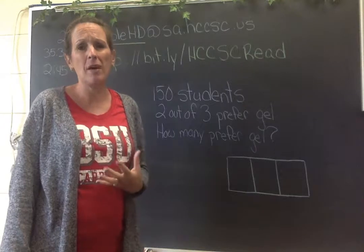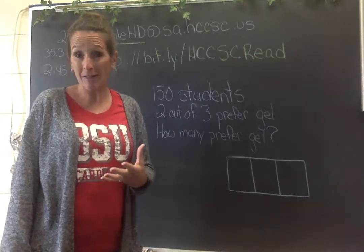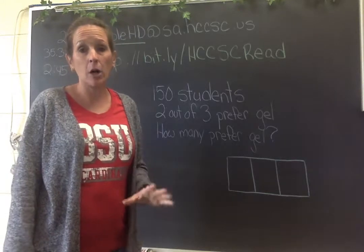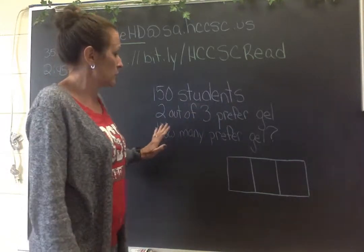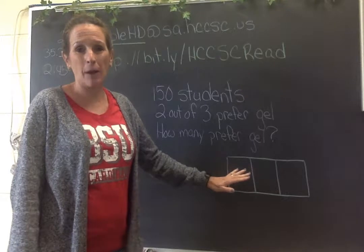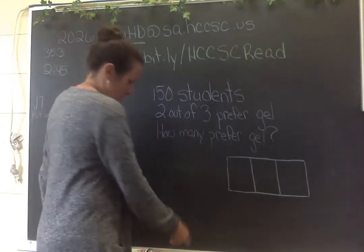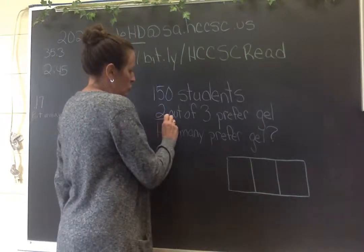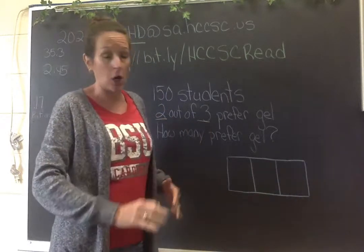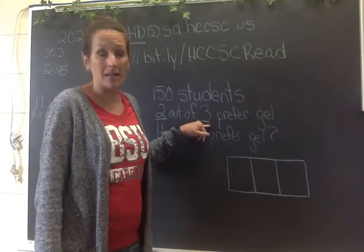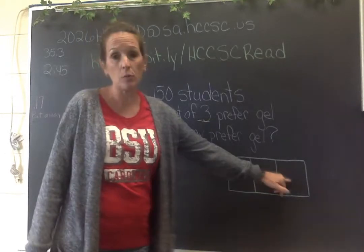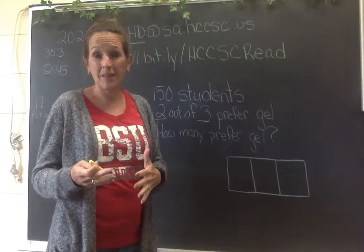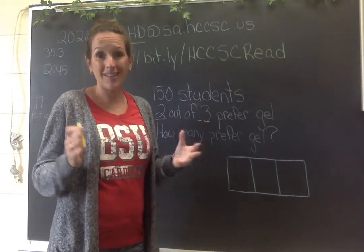The new method we talked about today was a bar diagram. To make a bar diagram, look at the numbers you have in your problem. Because it said two out of three, my bar needs three boxes — and that's why you see I have three boxes in my bar.